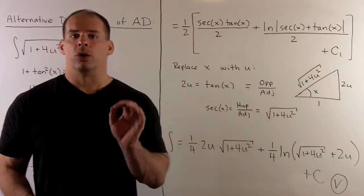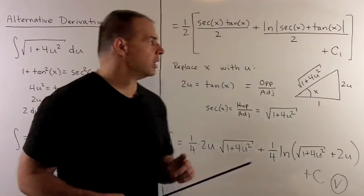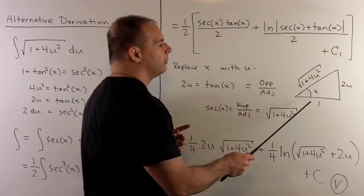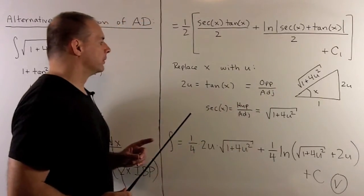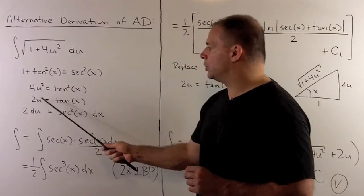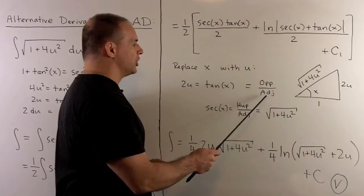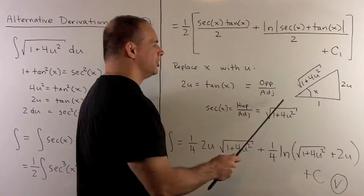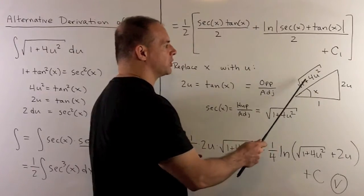Now, we want to remove the x, because our problem is stated in terms of u. We're just going to draw a right triangle, label the legs, and then try to figure out what these terms turn into. Our substitution is 2u equals tan of x. Tan of x is opposite over adjacent on the right triangle. Our opposite will let be 2u. The adjacent will let be 1, which means our hypotenuse is going to be square root of 1 plus 4u squared.